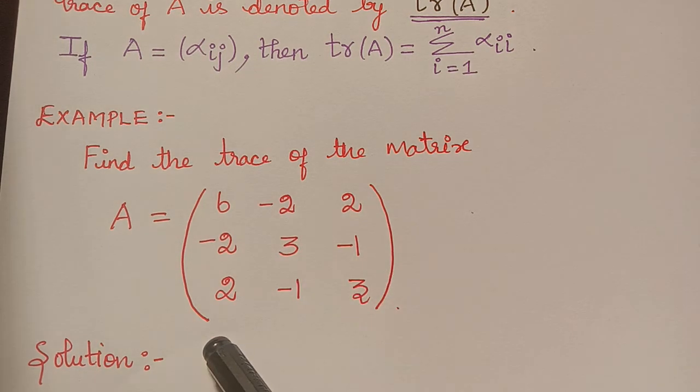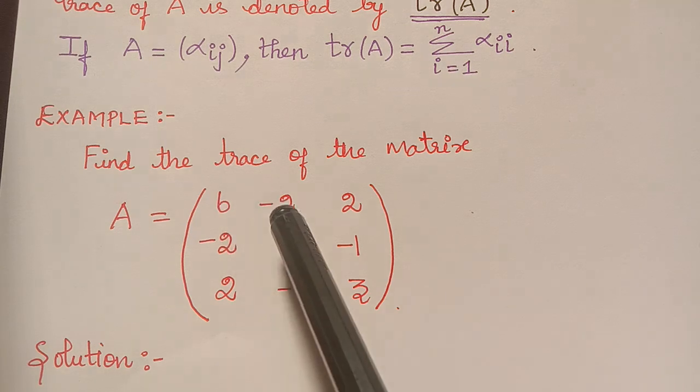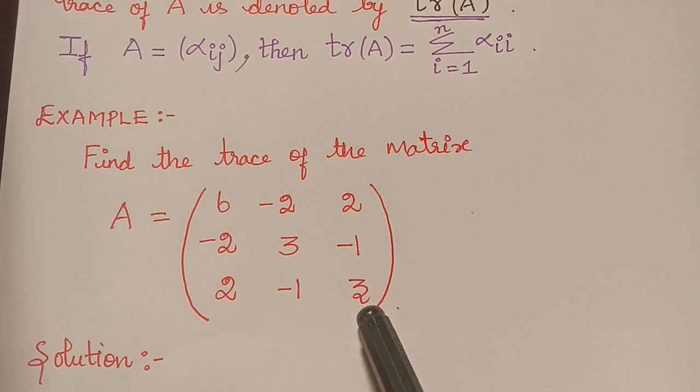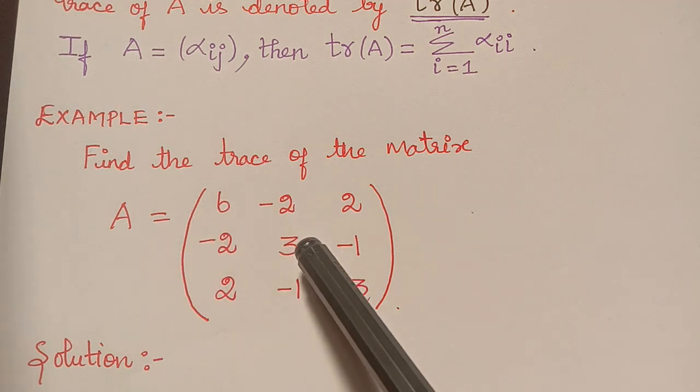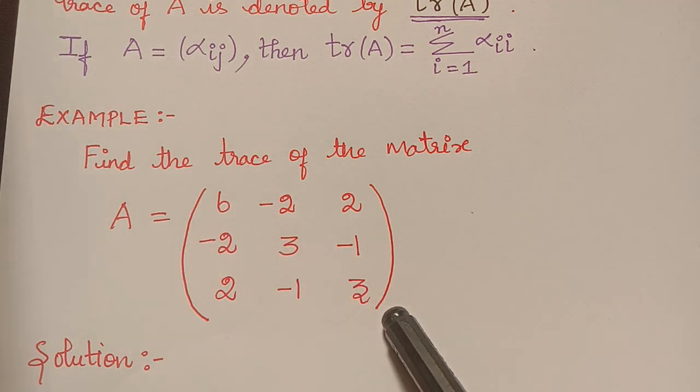If we notice here, the diagonal elements of this matrix are 6, 3, and 3. Therefore, the trace of the matrix A will be equal to 6 plus 3 plus 3, which is equal to 12.